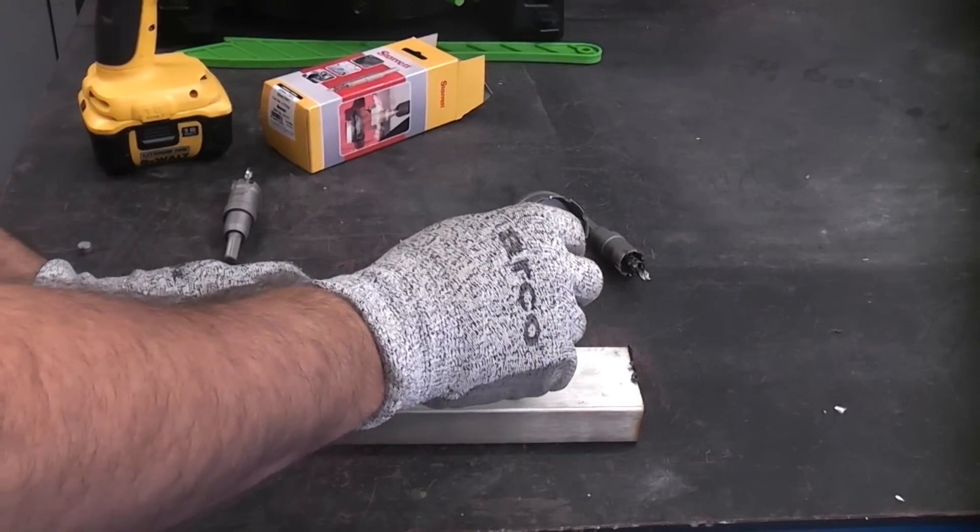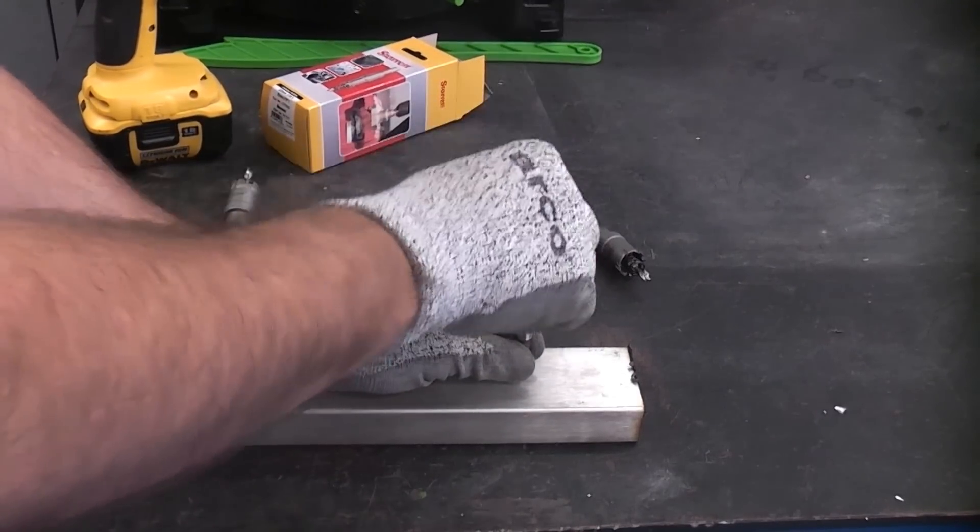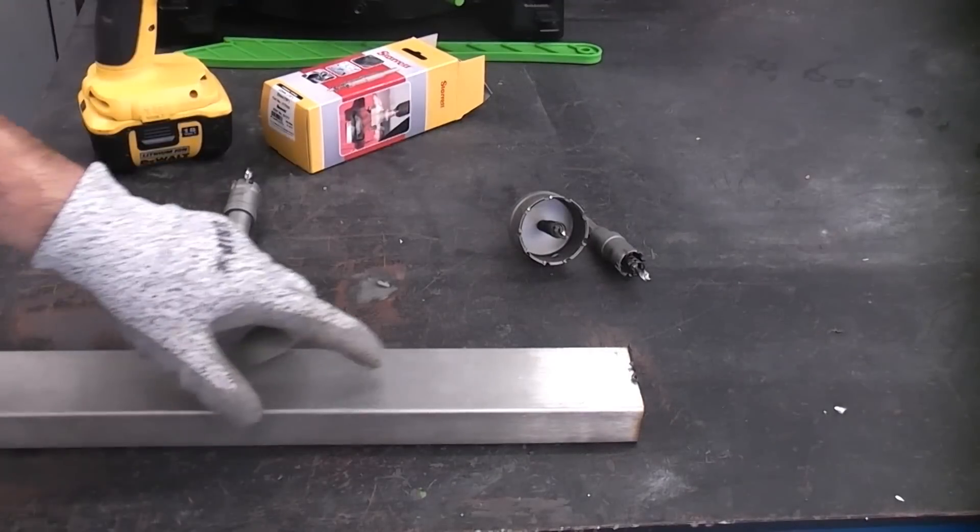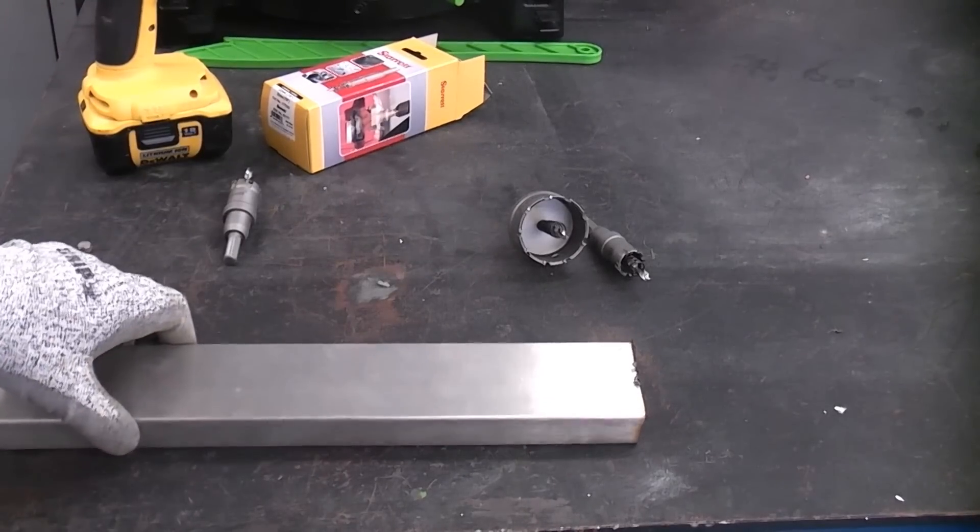So I'm just going to center punch where I want the hole to be. That will prevent the bit from slipping when I'm starting to drill the hole.